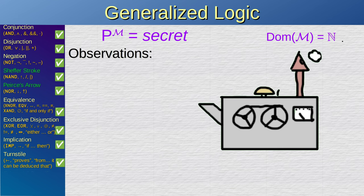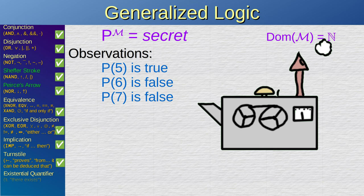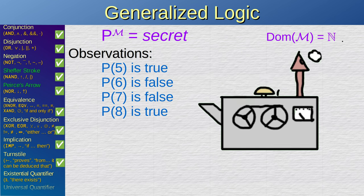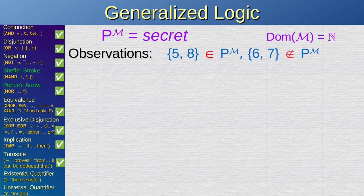You make some experiments and notice that P5 is true, but P6 is false. P7 is also false, but P8 is true. Now let's make room on the paper by expressing this in a more concise form. We can say that numbers 5 and 8 are part of the relation P in our model, and numbers 6 and 7 are not part of the relation P in our model.